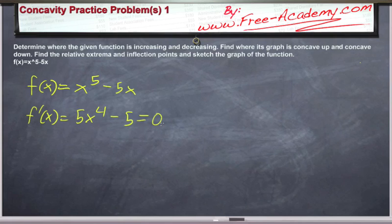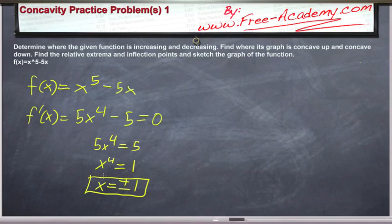And then we're going to set this equal to zero because this is going to give us our critical points, which we can then determine if they're inflection points or if they are absolute maximums or minimums. So, 5x to the fourth minus 5, this is 5x to the fourth equals positive 5, x to the fourth equals 1, which means that x is going to be equal to plus or minus 1. Those are going to be our critical points, x equals positive 1 and negative 1.